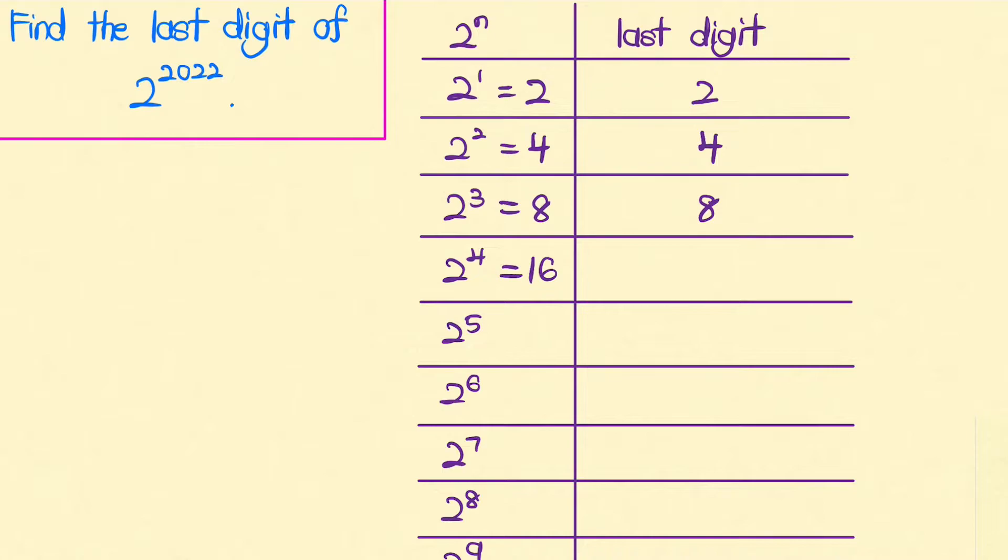2 to the power of 4 is just 8 times 2, which the last digit is just 6. 2 to the power of 5, similarly you can do that and you get that is 2. And 2 to the power of 6 is 32 times 2, which is 64, and the last digit is just 4.